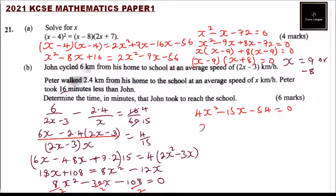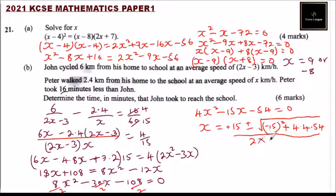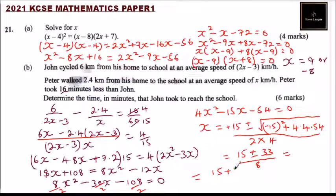Computing the discriminant: 15 squared is 225, and 4 times 4 times 54 is 864, giving 225 plus 864 equals 1089, whose square root is 33. So x equals (15 plus 33) over 8 or (15 minus 33) over 8, giving x equals 48 over 8 equals 6, or x equals minus 18 over 8 equals minus 2.25.